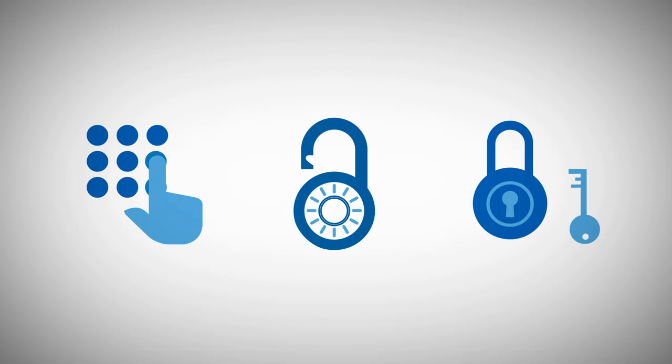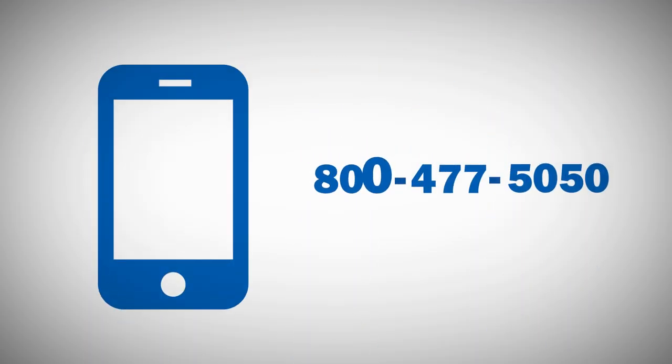Additionally, if access to the meter requires a code, combination, or key, please call us at 1-800-477-5050 to update your information.